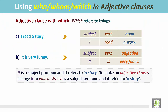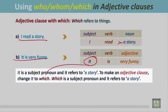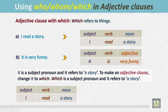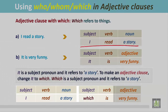To make an adjective clause from these two sentences, 'it' is a subject pronoun and it refers to 'a story.' To make an adjective clause, change 'it' to 'which.' 'Which' is a subject pronoun and it refers to 'a story.' Write the first sentence in full: 'I read a story, which is very funny.' The adjective clause begins with who, whom, or which.